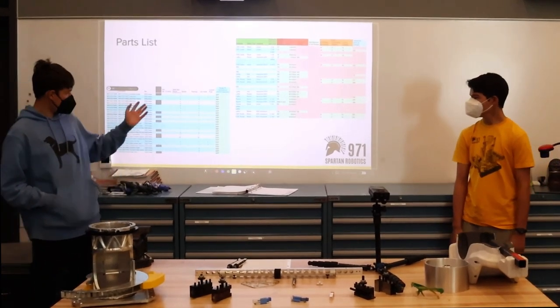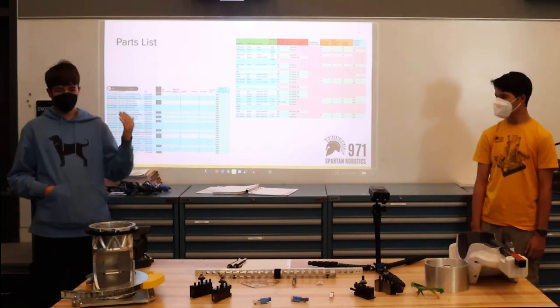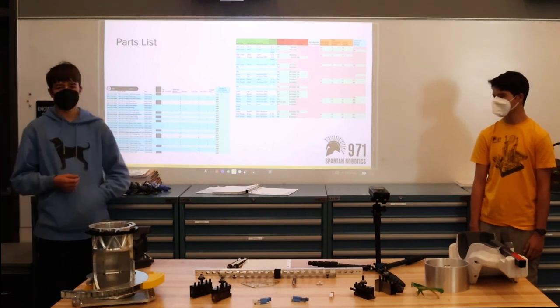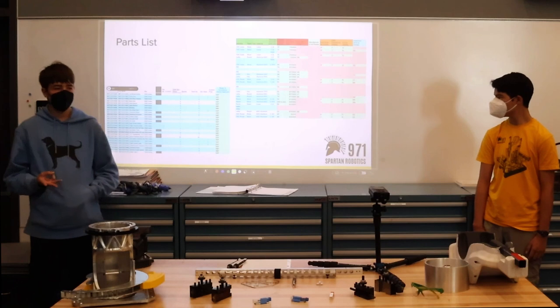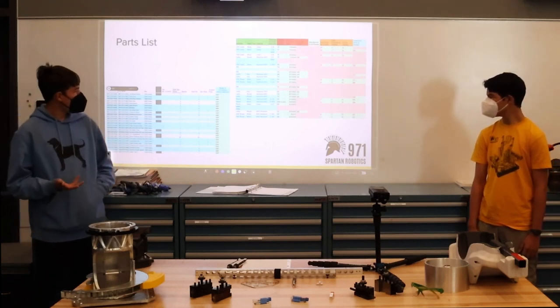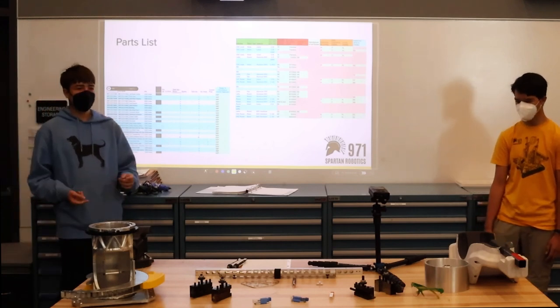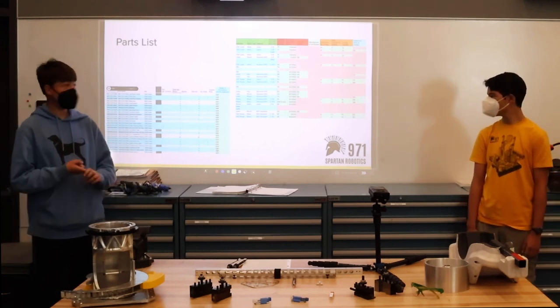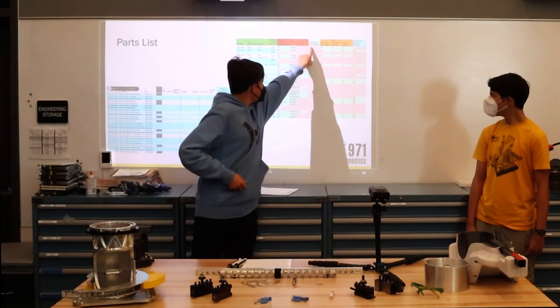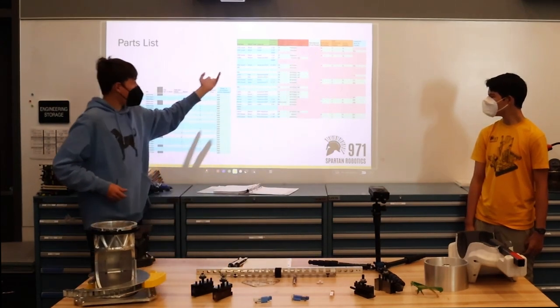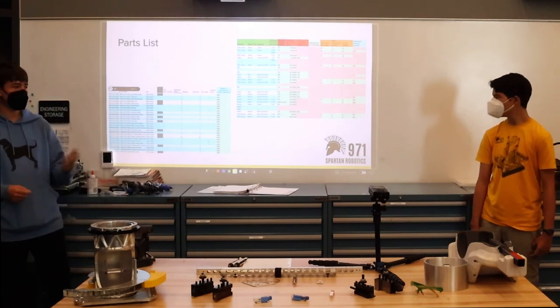So something we do is we make a parts list for every single one of our robots. This is a way to organize all the parts we're making and all the information about them. So like how many we need, what material they're made of, which subsystem they go to. And it's just really helpful to know if we have the part and who made it. There's like accountability, so who the manufacturer was and who did the drawing for the parts. So we know like who to go to if something went wrong and who can fix it.